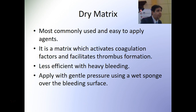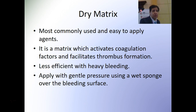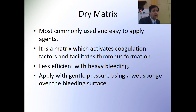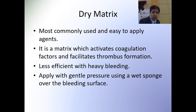The dry matrix type agents are the most commonly used and easiest to apply. They are matrices which activate coagulation factors and facilitate thrombus formation — the thrombus forms on that matrix, which leads to adequate hemostasis. Of course, they are less efficient with heavy bleeding; heavy bleeding requires surgical techniques to control it.